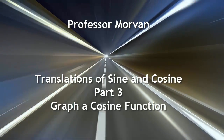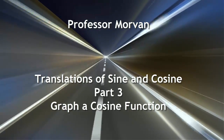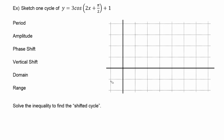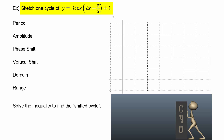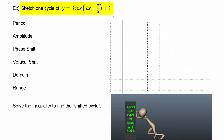In part three of our lesson on translations of sine and cosine, we are going to graph a cosine function. In this example, we are being asked to sketch one cycle of y equals three cosine of the quantity two x plus pi over two, plus one. Let's check your understanding — pause the video, work the example on your own, then restart the video to check your answer.